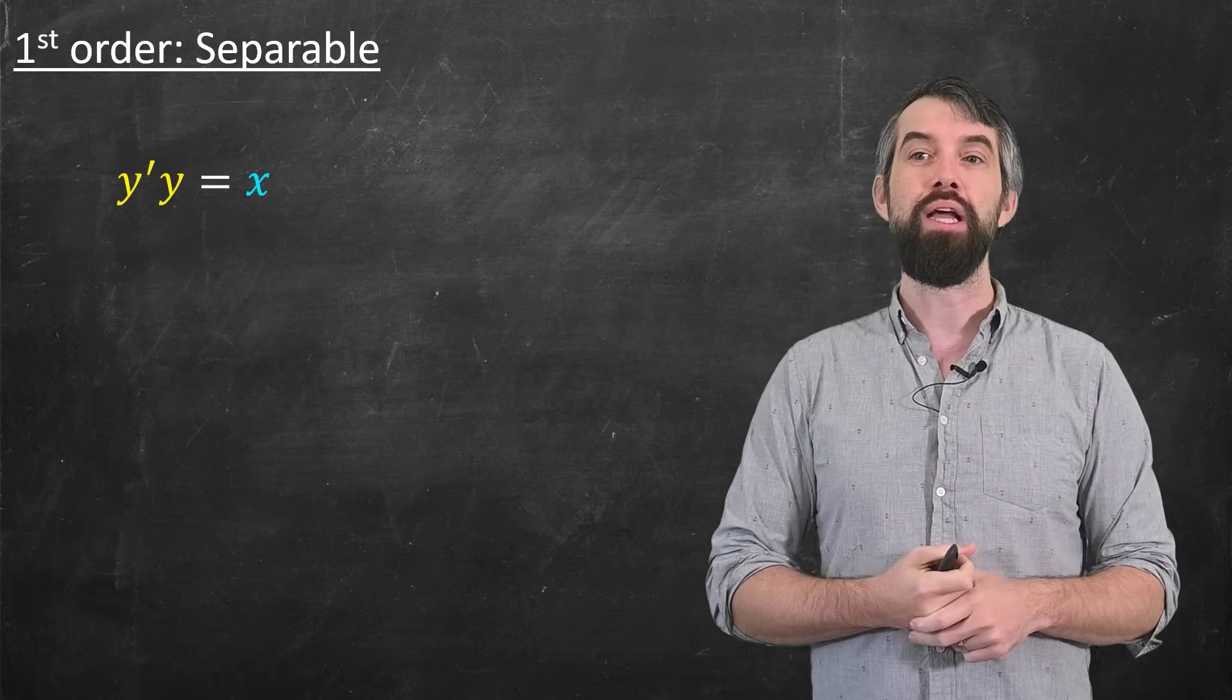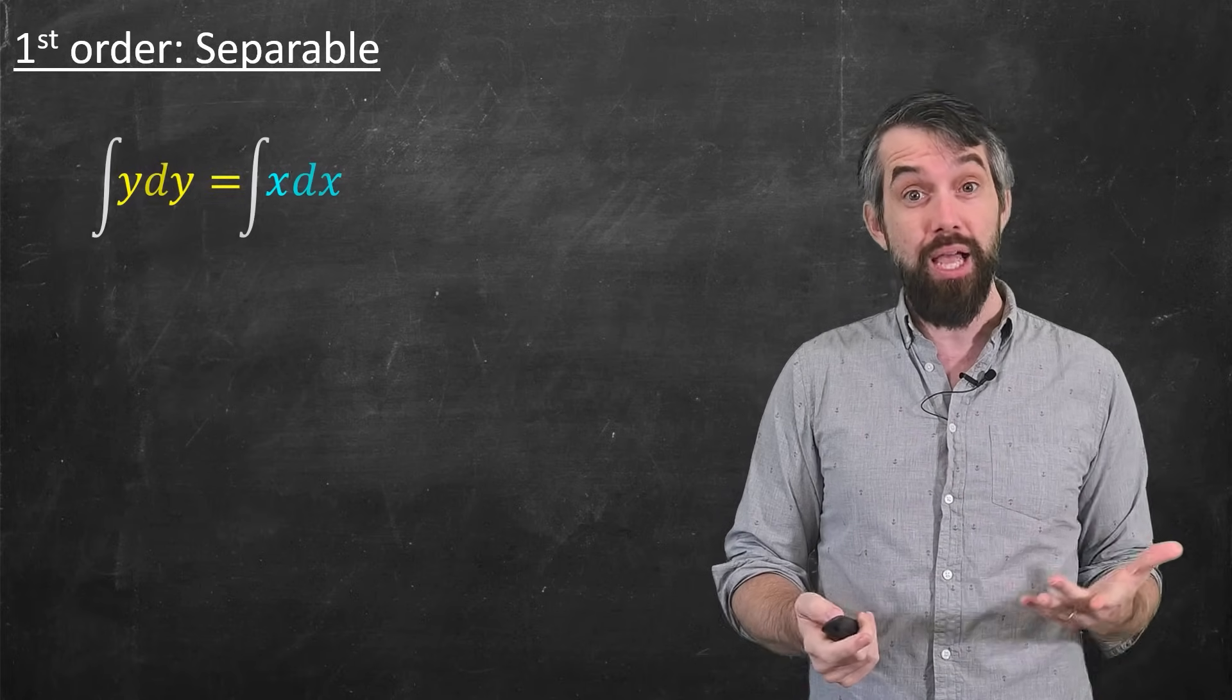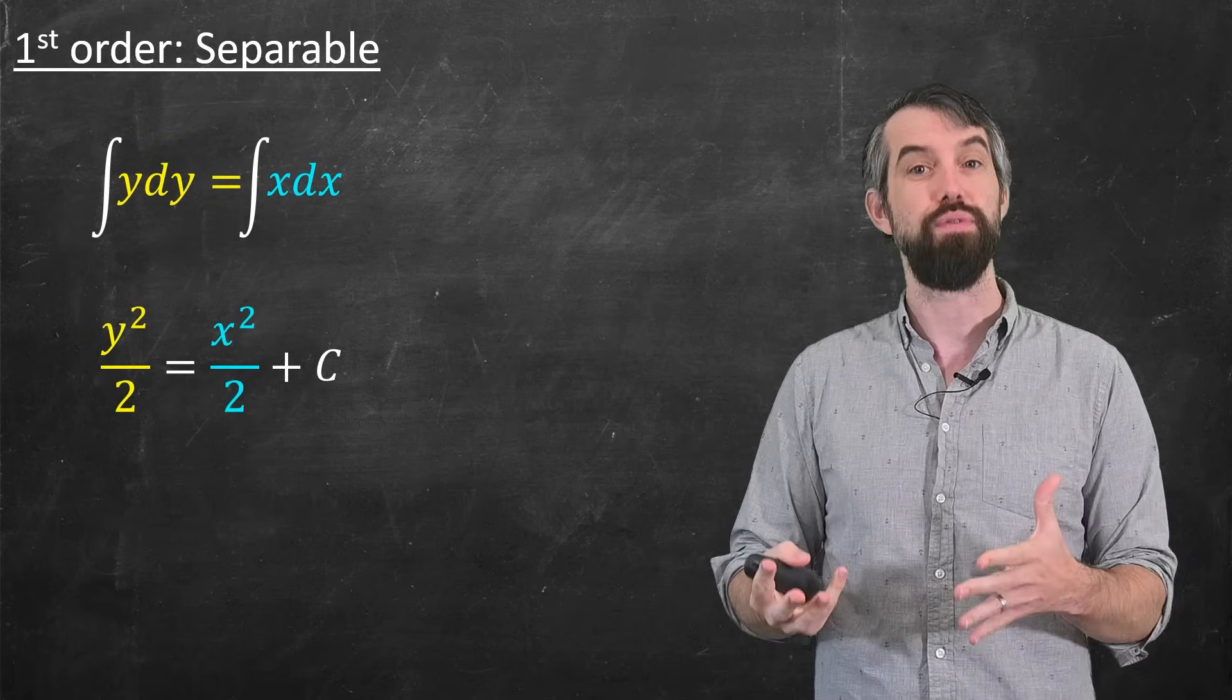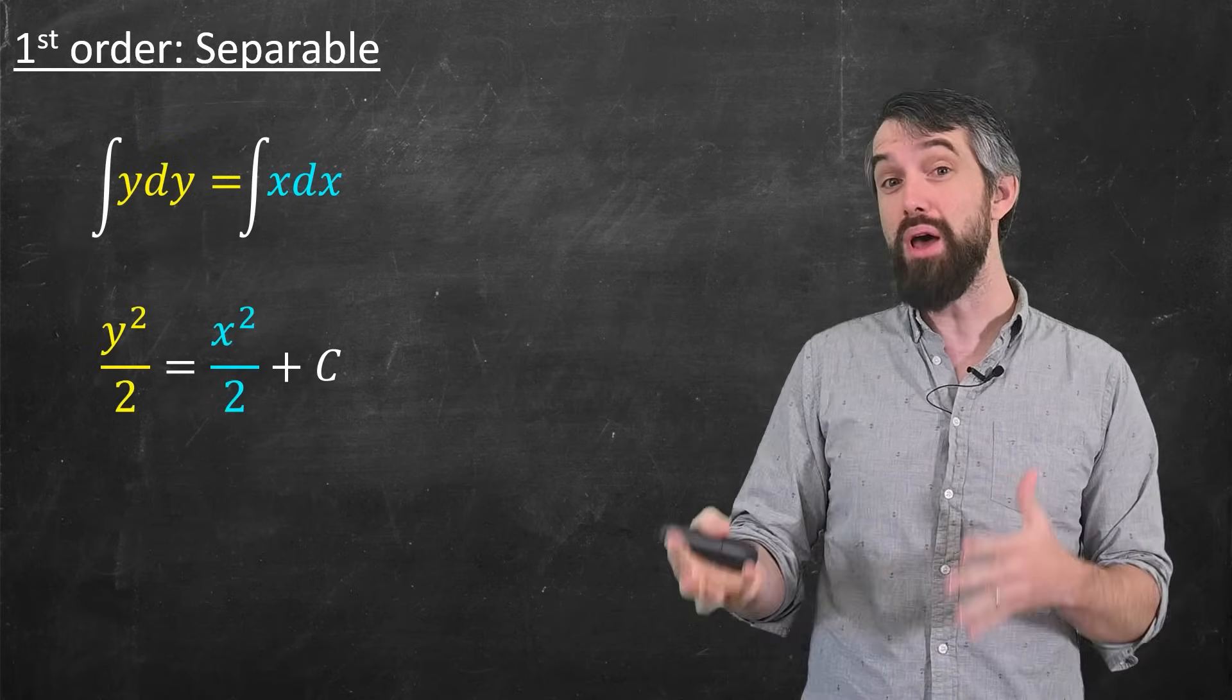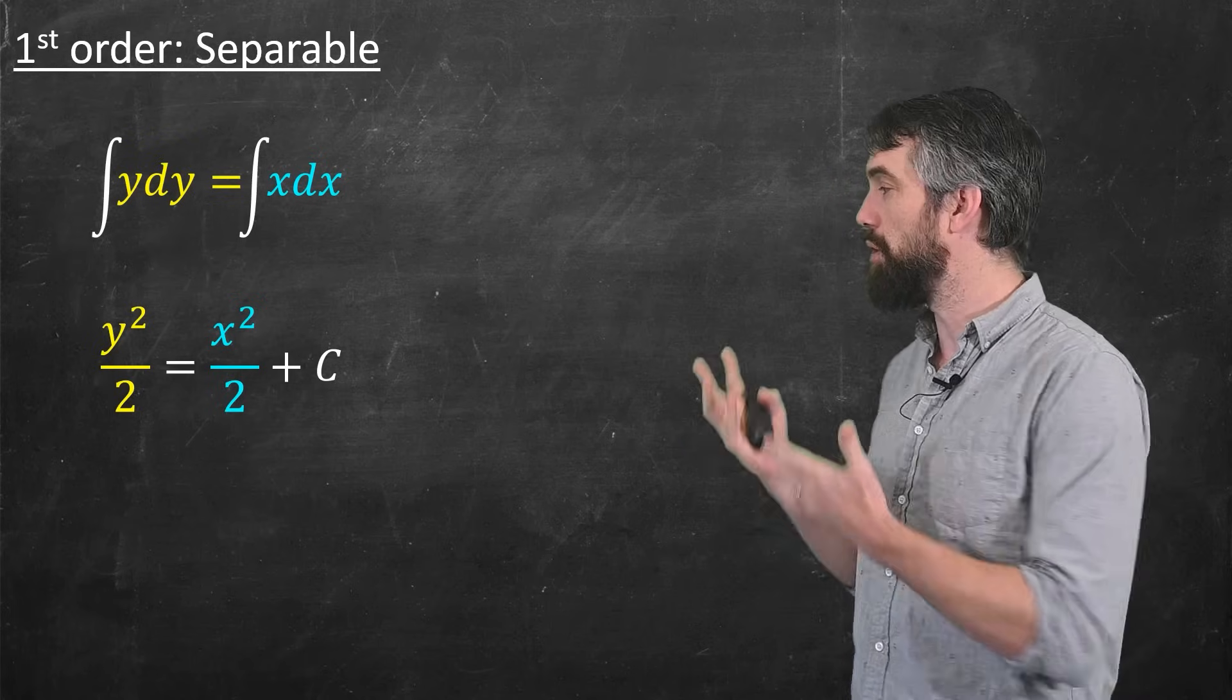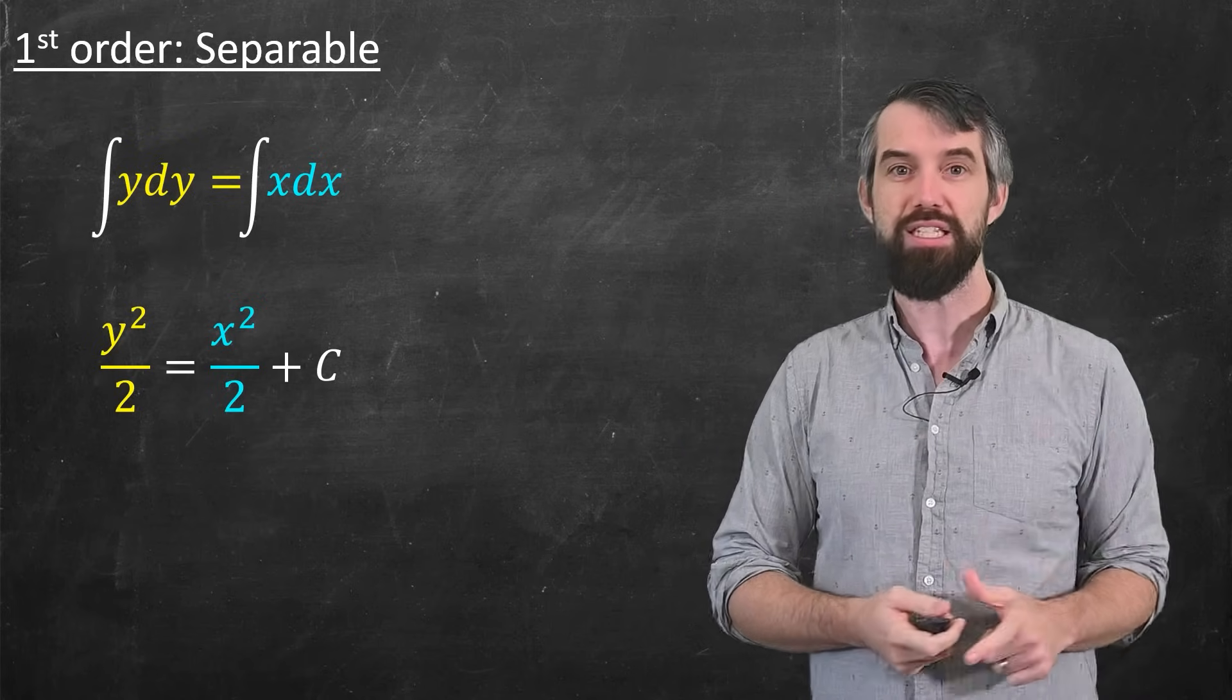This makes it really easy to integrate both sides and to get a solution, in this case, y squared over two equals x squared over two plus a constant. Separable equations are one of the few nonlinear ones that we can really solve, and so I always check for this first if it's first order.